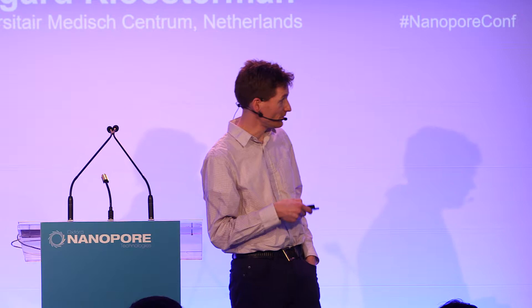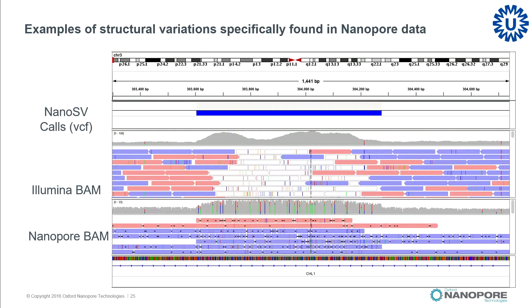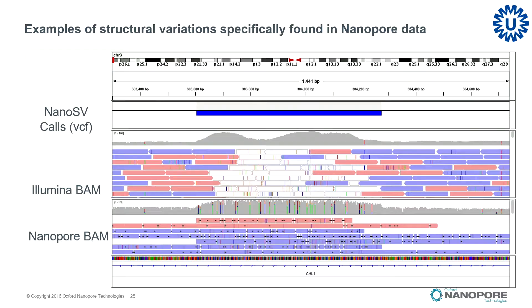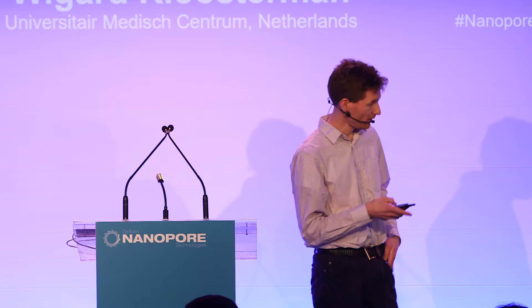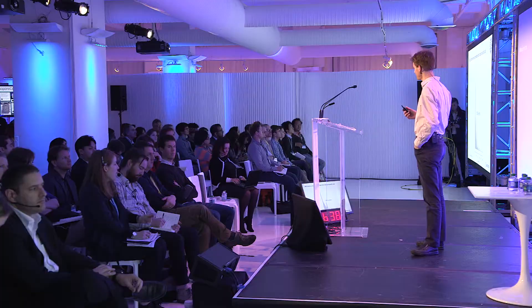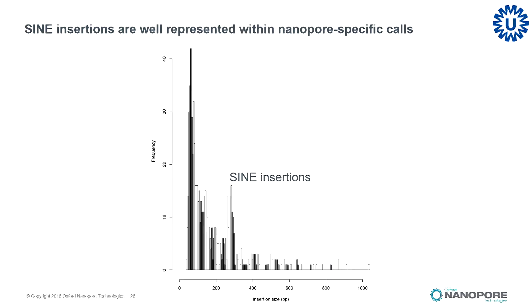Let's look at a few of these nanopore-specific structural variation calls. In IGV, there is a deletion very obvious from the nanopore data but not clear from the Illumina data, and it wasn't among the Illumina calls generated here. Another example is a duplication — it's quite obvious that this is a very difficult region to map reads to in Illumina, but nanopore didn't seem to have problems and we could nicely call a tandem duplication. Further evidence is shown by the sizes of insertions detected in these nanopore-specific calls: a peak appearing due to SINE insertions, which are known to be very prevalent in human genomes.